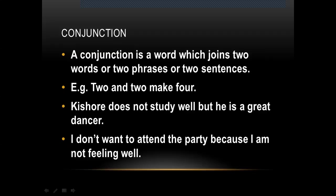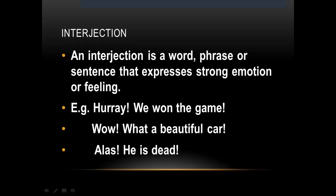A conjunction is a word which joins two words, two phrases, or two sentences. 'Two and two make four' — 'and' is a conjunction. 'Kishore does not study well, but he is a great dancer' — 'but' is joining the two sentences, so 'but' is a conjunction. 'I don't want to attend the party because I am not feeling well' — 'because' is a conjunction.